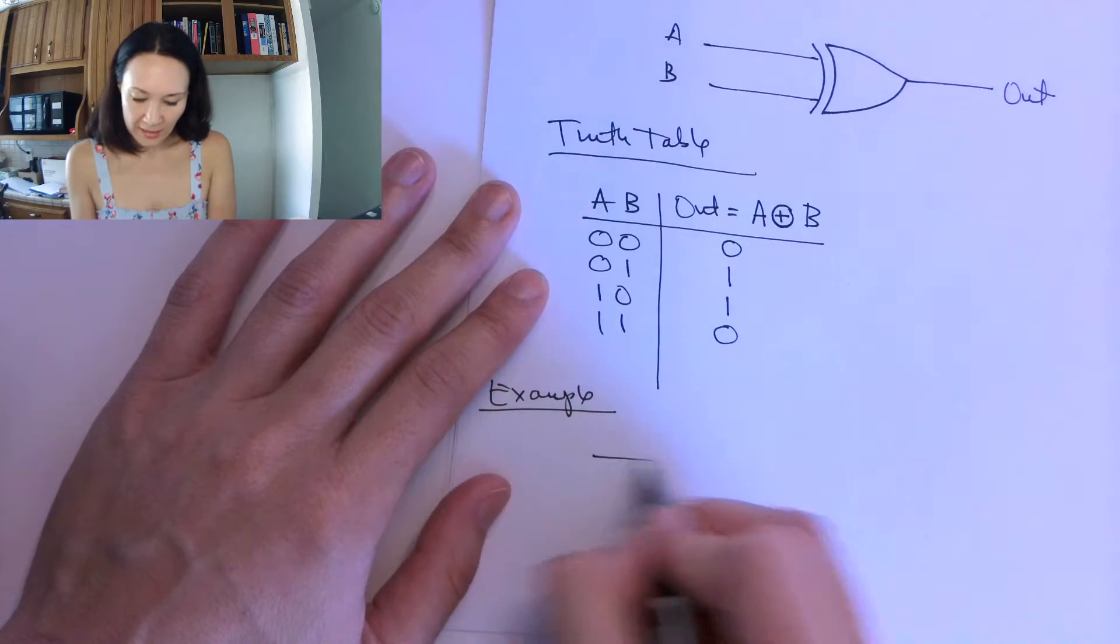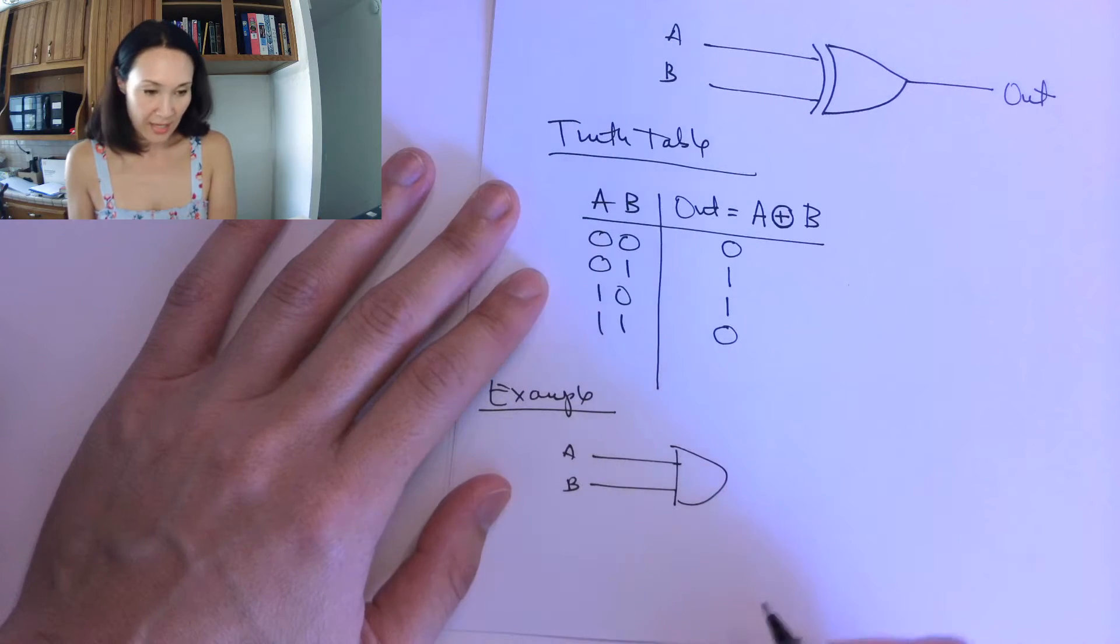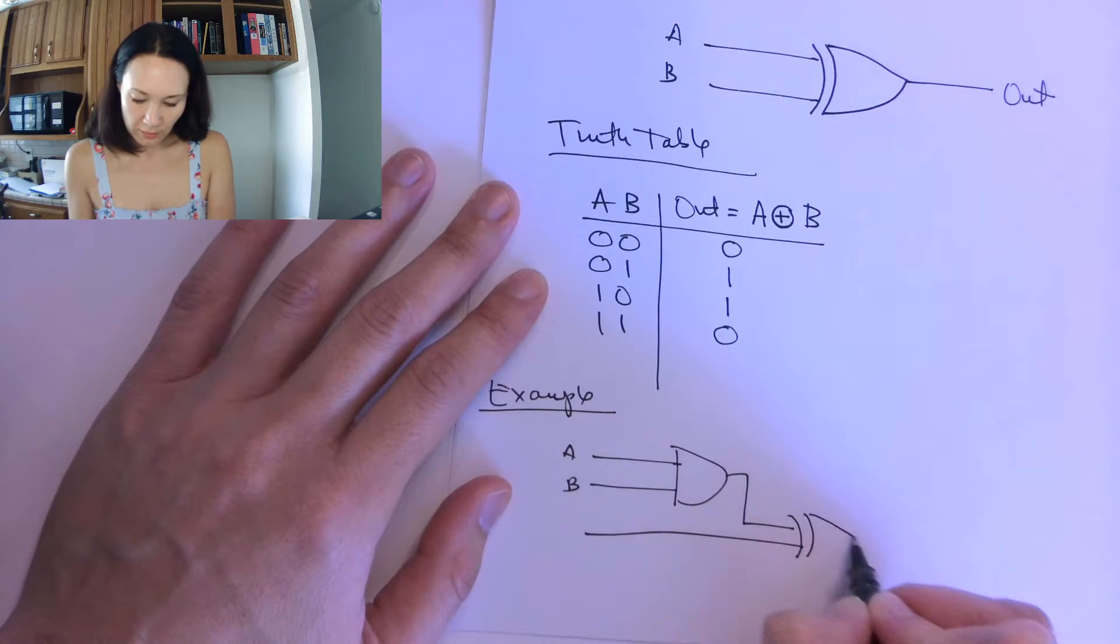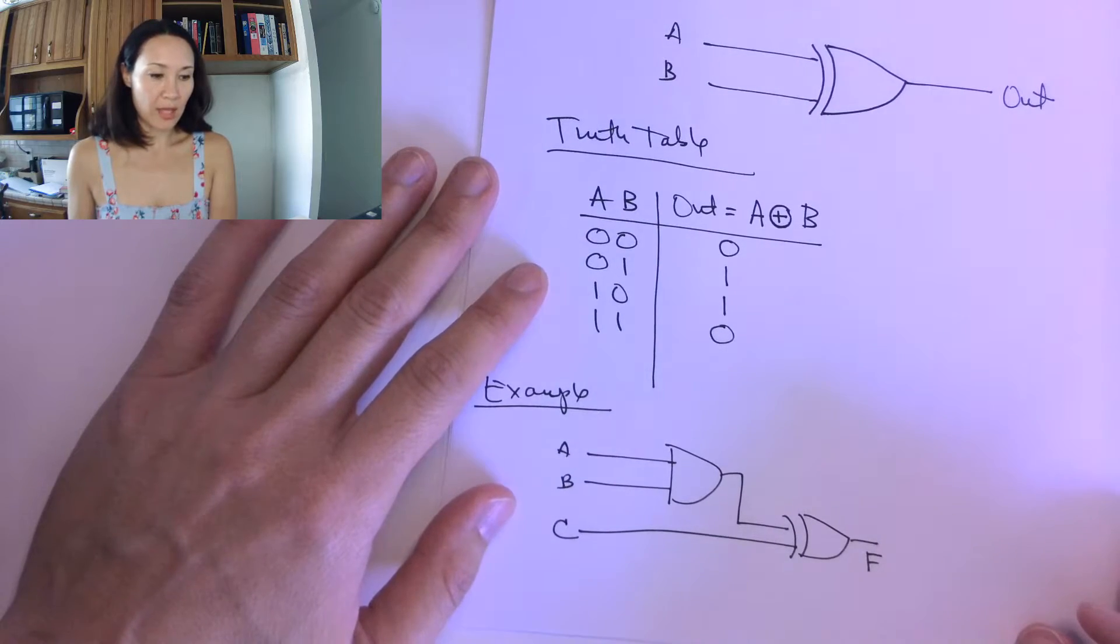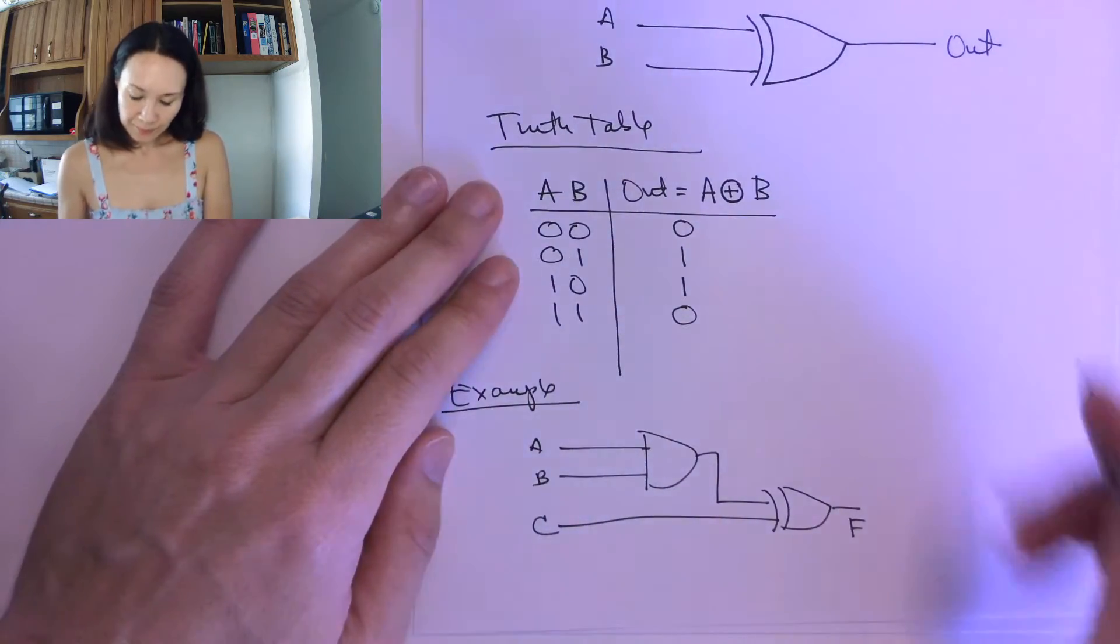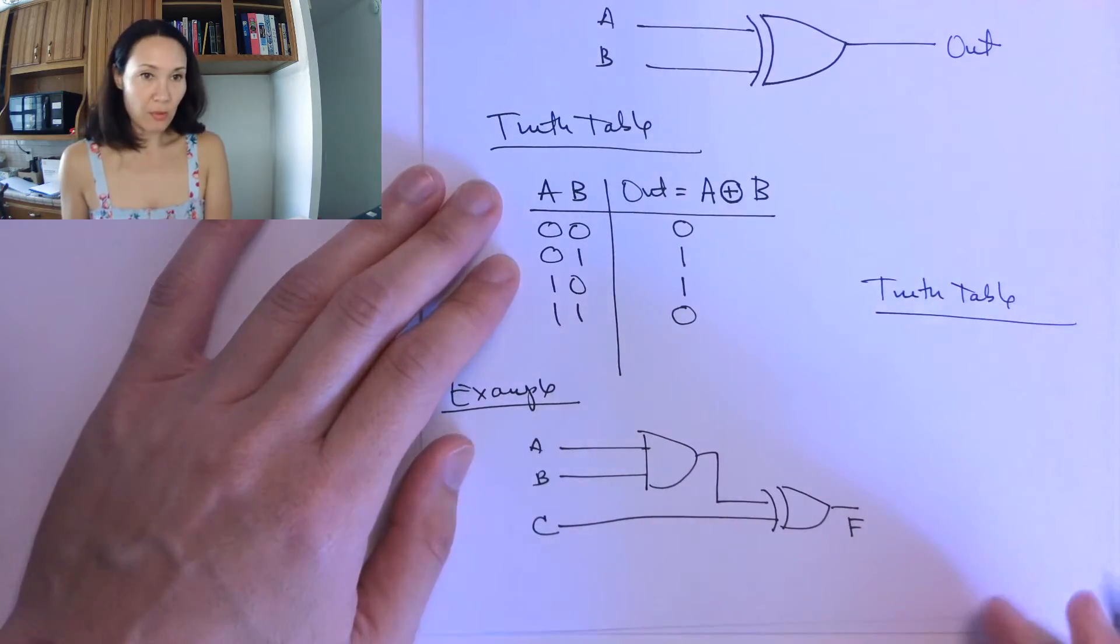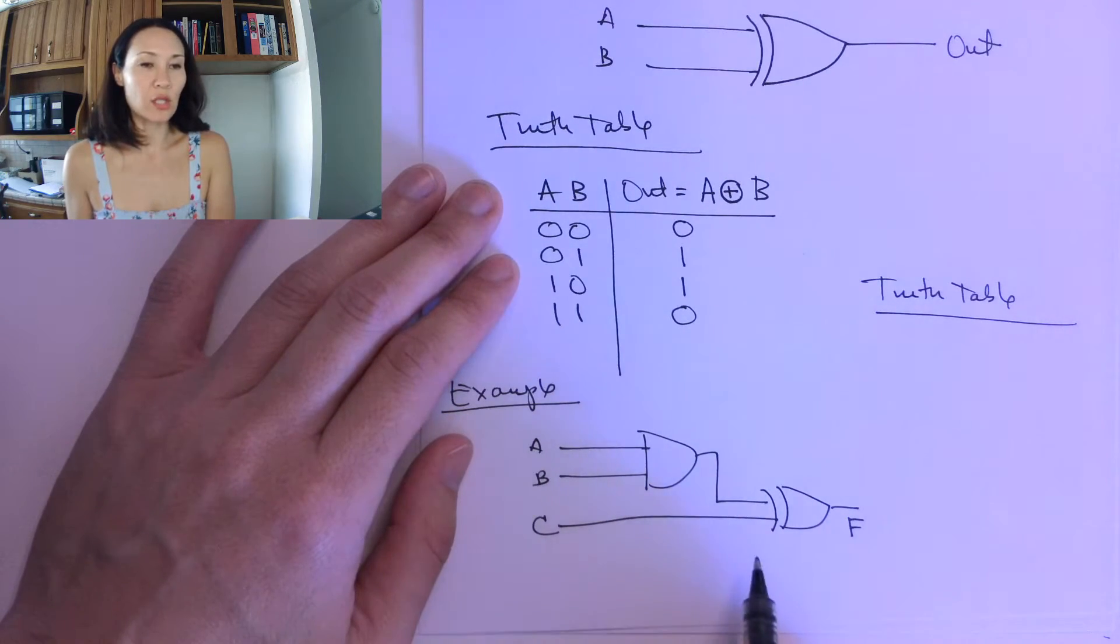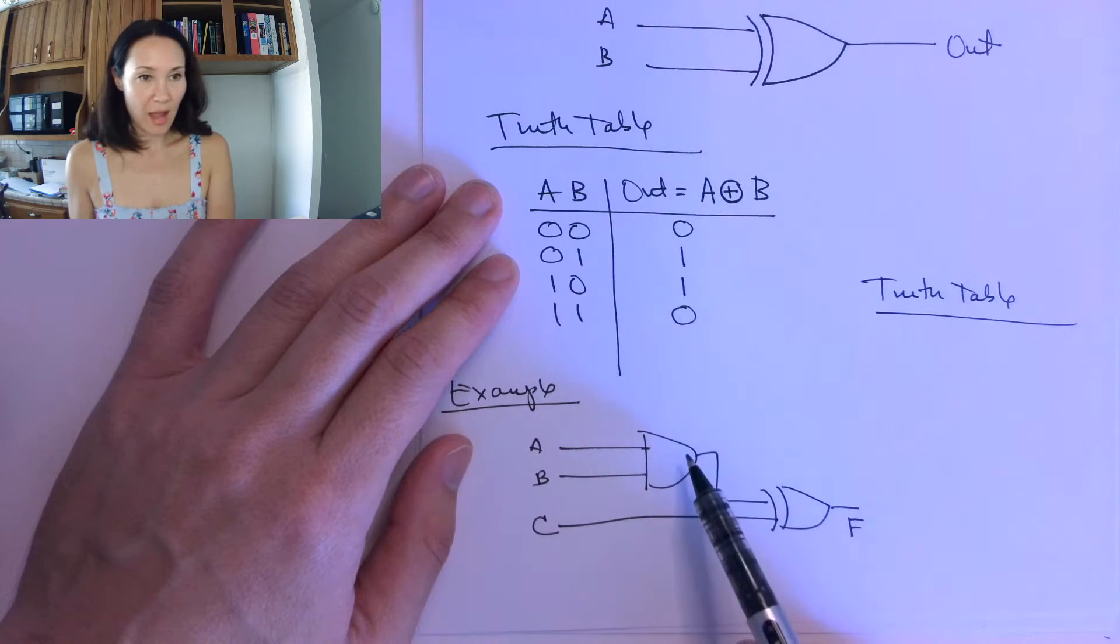So suppose we had inputs A and B going into an AND gate. The output of the AND gate, suppose this gets XORed with a third input C, and we can call our output F. So if we wanted to make the truth table for this particular circuit, this is a two-level circuit, right? We've got two logic gates that are cascaded, meaning that this one relies on the output from this one.